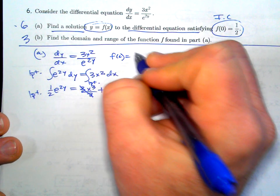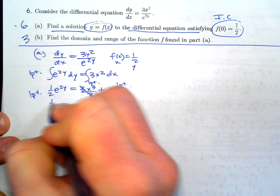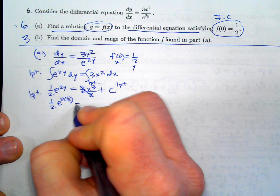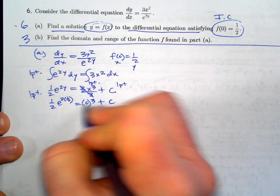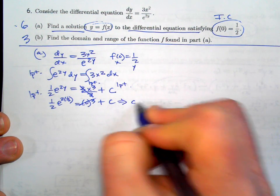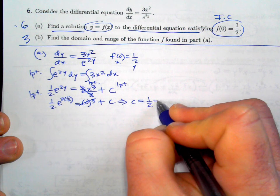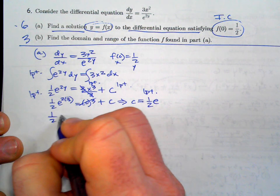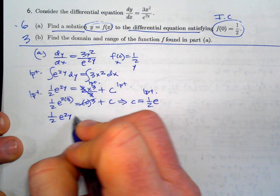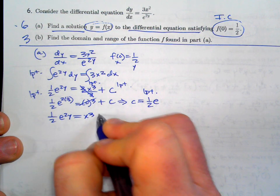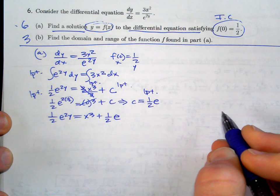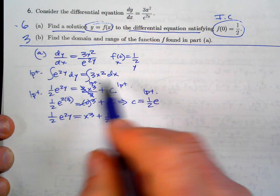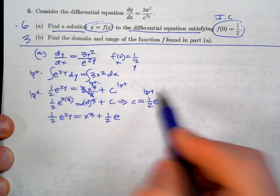Now find C using the initial condition: plug in to get (1/2)e^(2·(1/2)) = 0³ + C, so C = (1/2)e. That's another point. Plug C back in: (1/2)e^(2y) = x³ + (1/2)e. Now solve for y — that's the last step worth a point.